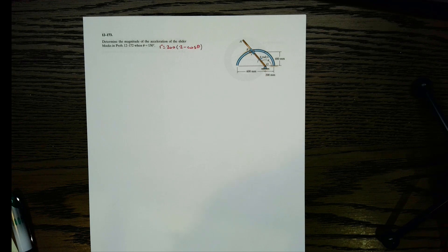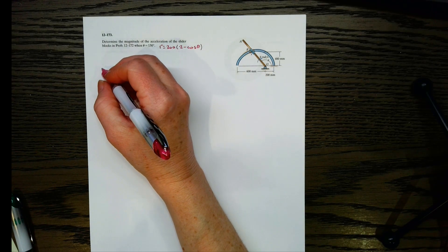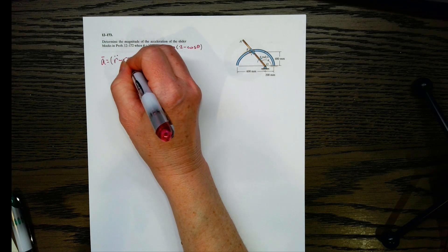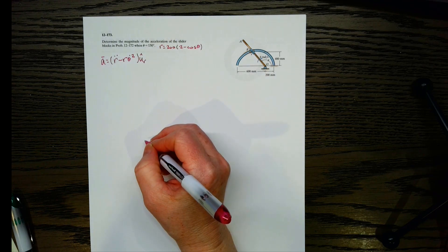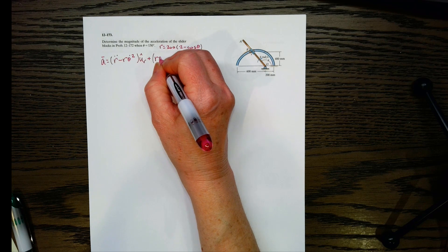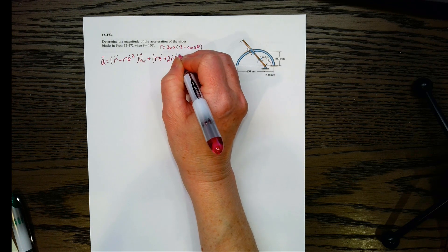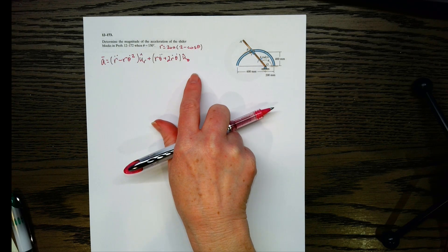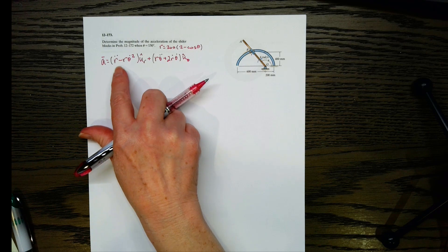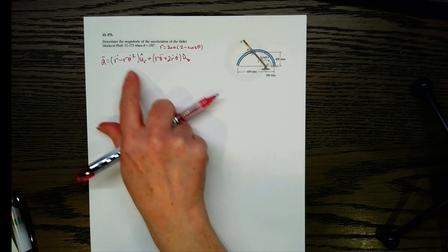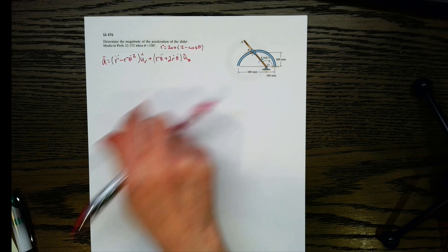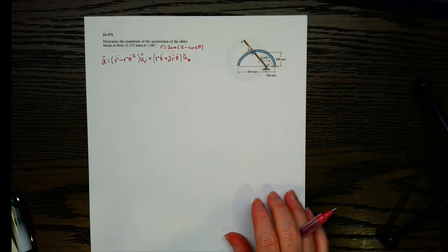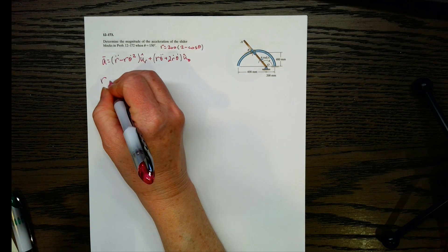We want to find the acceleration. We've established we need polar coordinates, so let's write out the acceleration equation in polar coordinates. We have R-double-dot minus R-theta-dot-squared as the radial term, and R-theta-double-dot plus 2R-dot-theta-dot times U-sub-theta as the transverse term. To find the magnitude, I need R, R-dot, R-double-dot, and the same for theta.